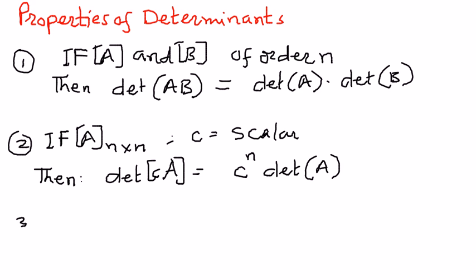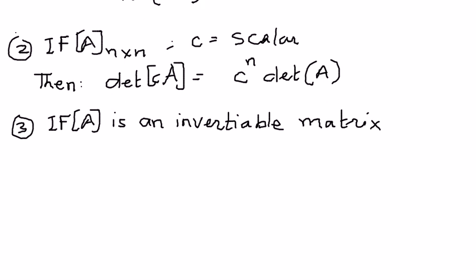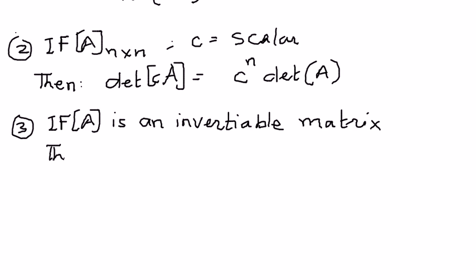The next property is, if A is an invertible matrix, then the determinant of A inverse,